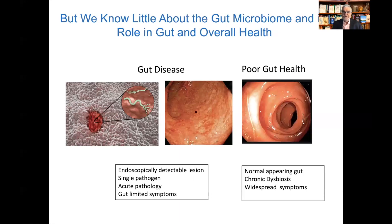If we talk about poor gut health, it's a very different situation. Even though everybody talks about this concept, if we did an endoscopy on all the people that think they're suffering from poor gut health, you wouldn't see anything — a normal-appearing gut. But it is a disturbance of the gut microbial composition, so-called chronic dysbiosis, and there can be widespread symptoms in this situation.